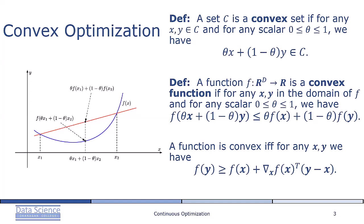A function f is convex if and only if for any two points x and y, we have that f(y) ≥ f(x) + ∇f(x)^T(y - x).